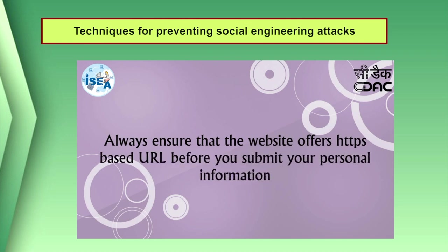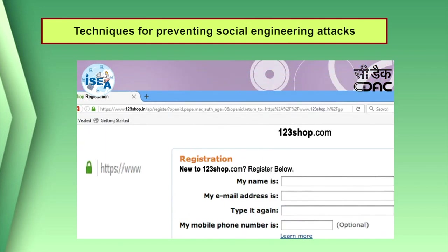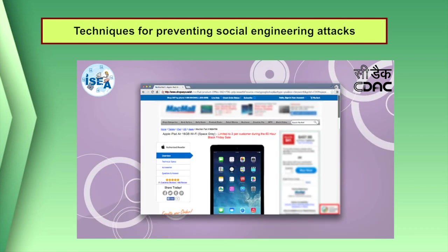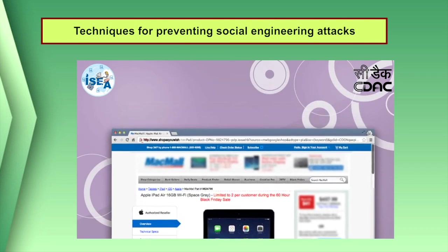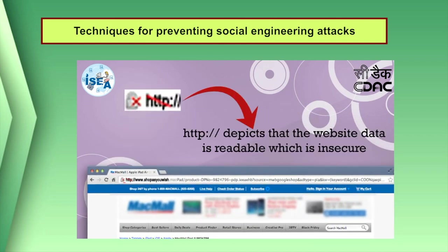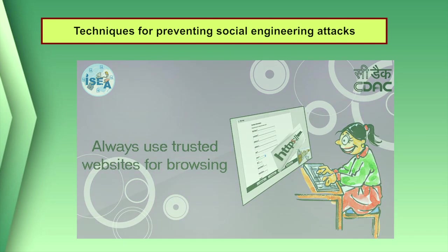Pay attention to the URL of a website. Malicious websites may look identical to a legitimate site, but the URL may use a variation in spelling or a different domain. If you are unsure whether an email request is legitimate, try to verify it by contacting the company directly. Do not use contact information provided on a website connected to the request — instead, check previous statements for contact information.